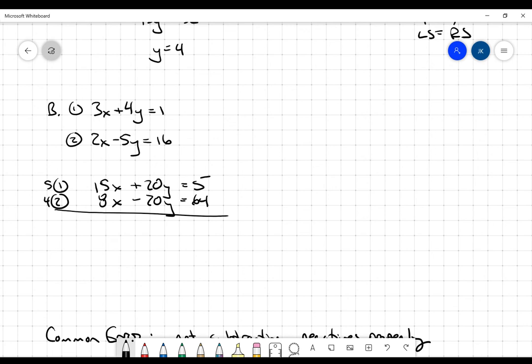Put those together. I'd like to get rid of the y-coordinates because the coefficients are the same value, even though the signs are different. So in this case here, because the signs are different, all I need to do is add these two equations to get rid of the y-coordinate.